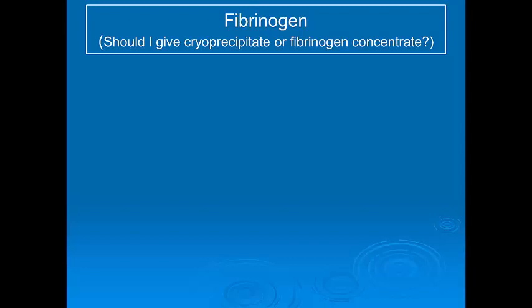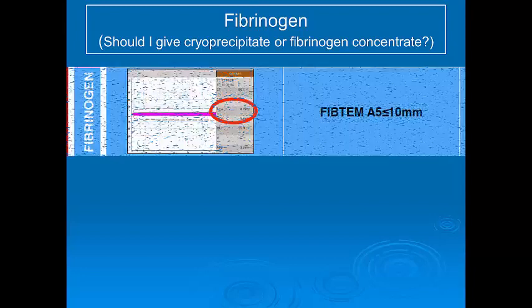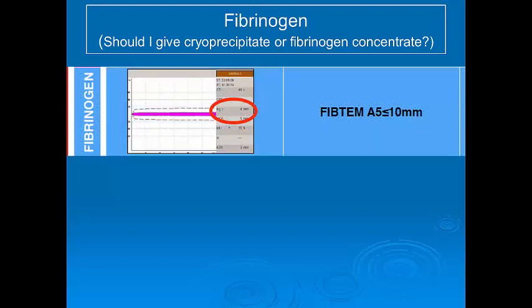Fibrinogen deficiency is probably the most common abnormality that occurs in major haemorrhage and is the second component that we assess. A FibTEM A5 of less than 10mm should trigger replacement of fibrinogen — either cryoprecipitate or fibrinogen concentrate — aiming to correct to a FibTEM A5 of greater than 12mm. It is important to note that traditional 8 to 10 unit doses of cryoprecipitate only modestly increase the FibTEM A5 by approximately 2mm, which is insufficient in many patients. It is vital that more severe deficiency is recognised and these patients are given a larger, more appropriate dose of fibrinogen right at the start, using a dose calculation table.